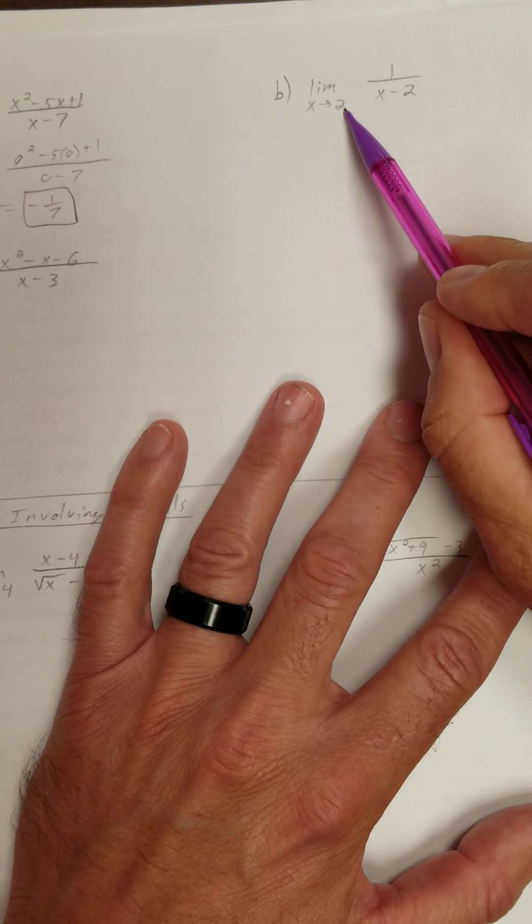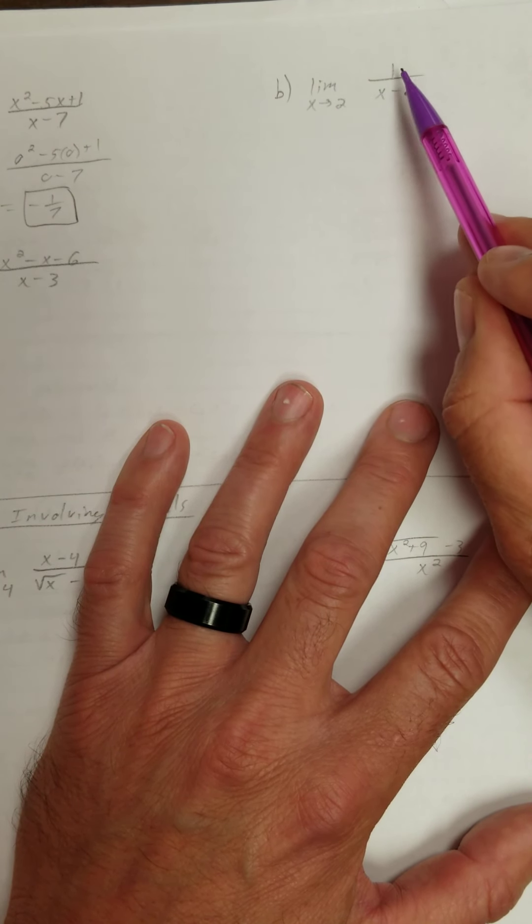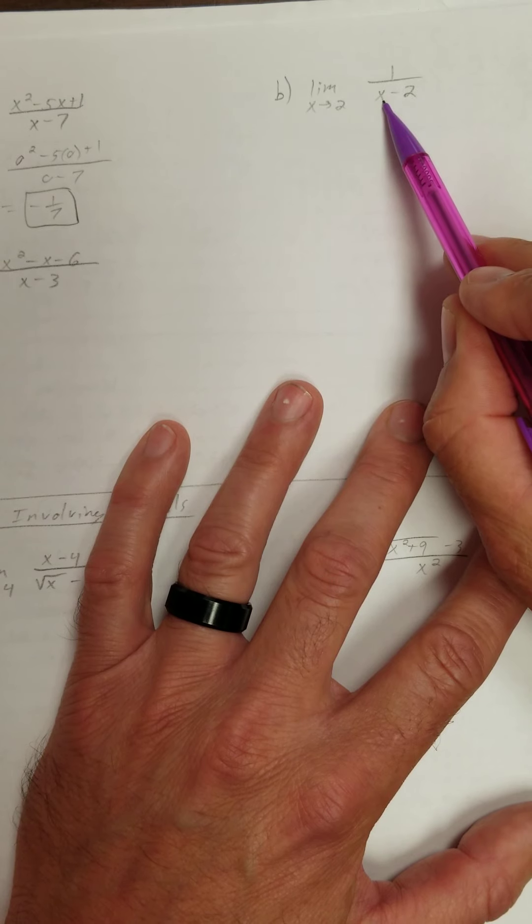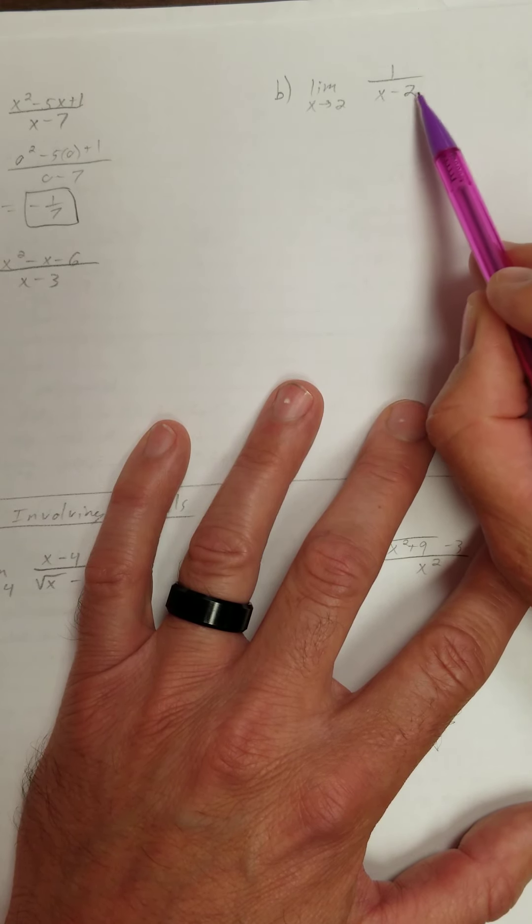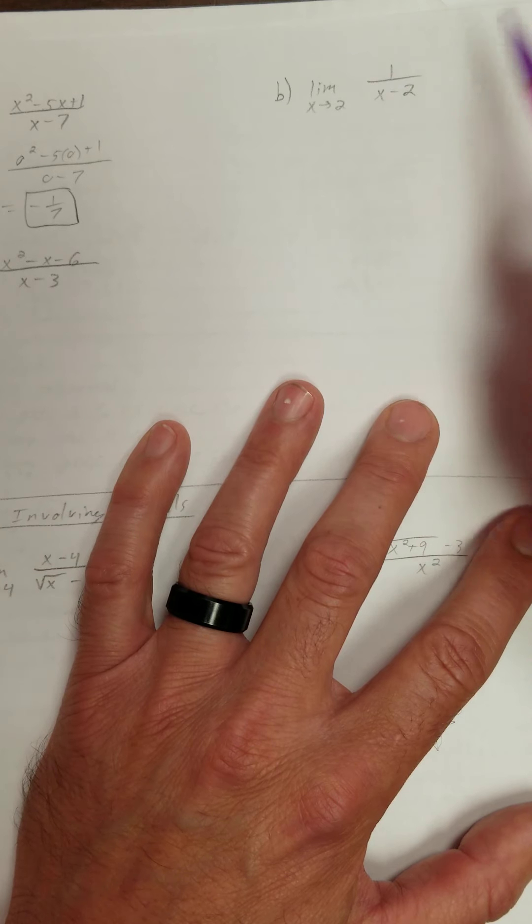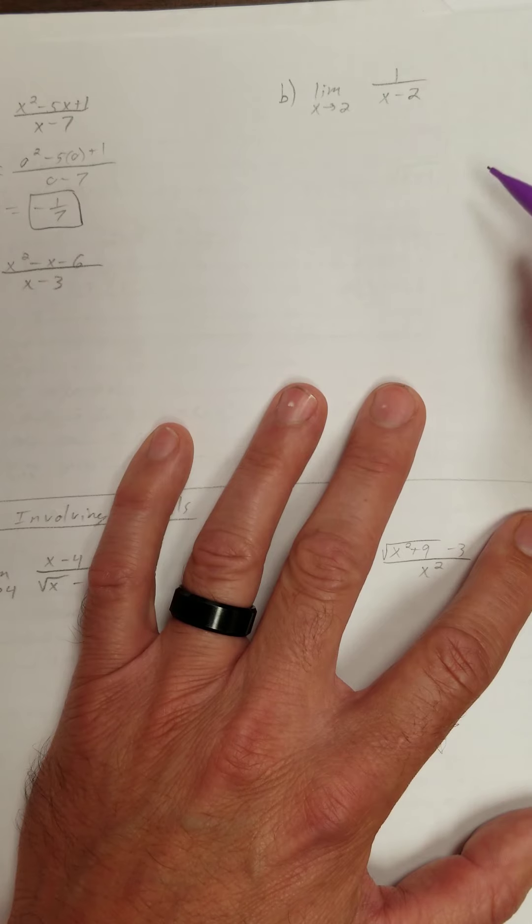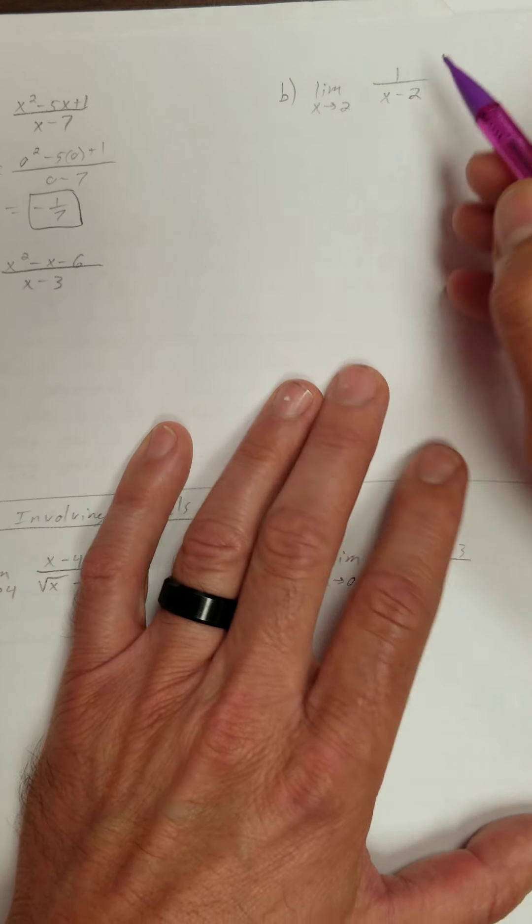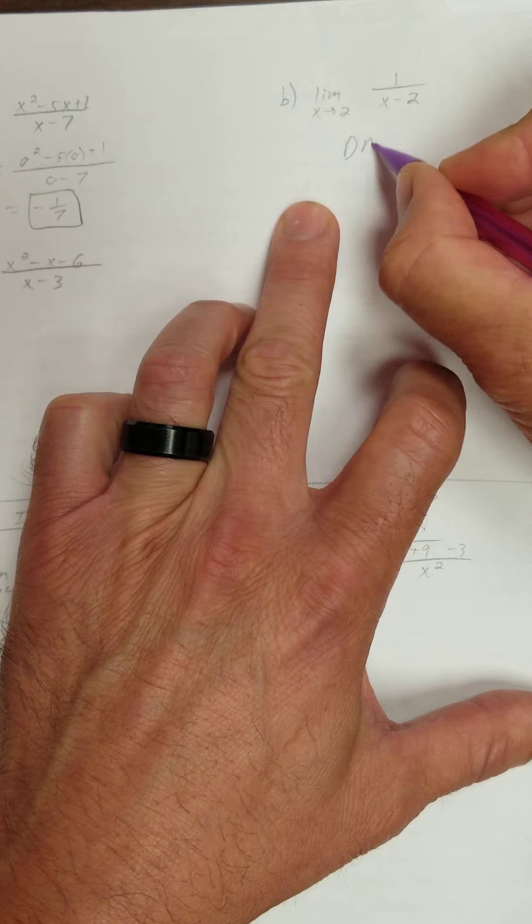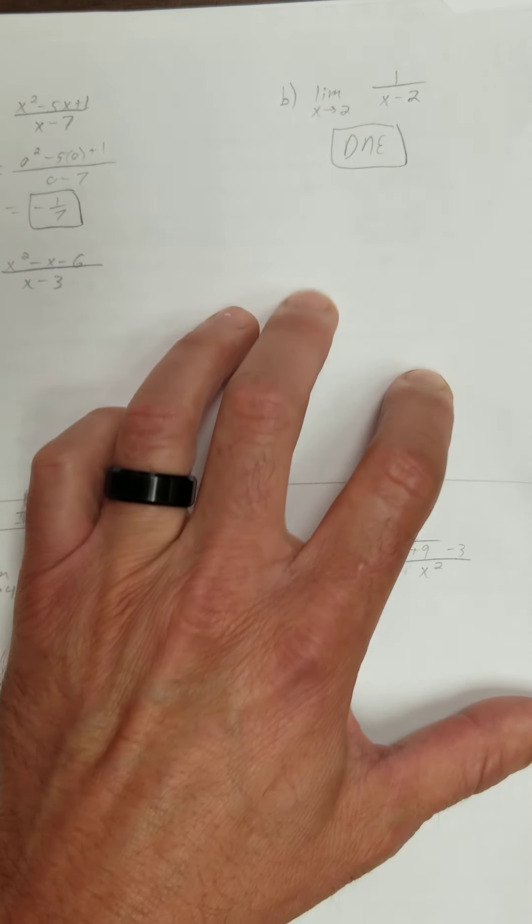How about b? What if I try to evaluate this rational function at 2? What if I try to sub in a 2 right there? My denominator's 0, but my numerator's not 0. That was like that second condition in that theorem. Denominator's 0, numerator's not 0. So we're going to put does not exist. This limit does not exist.